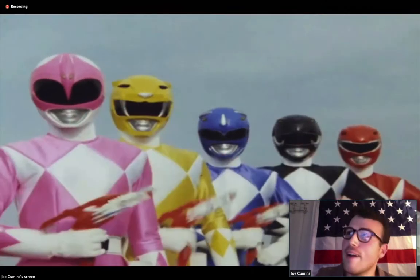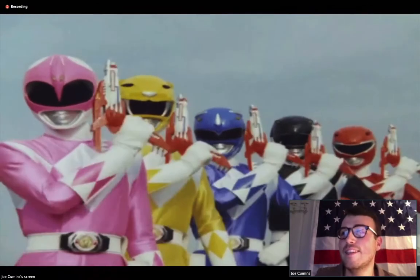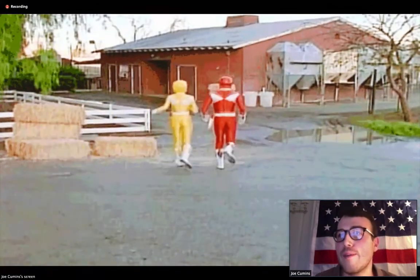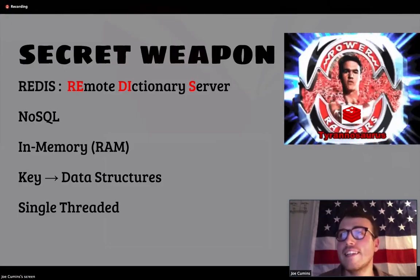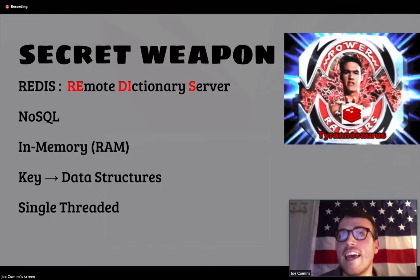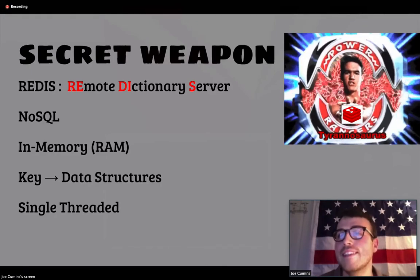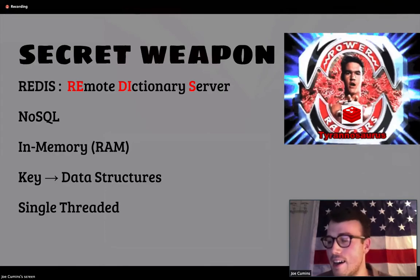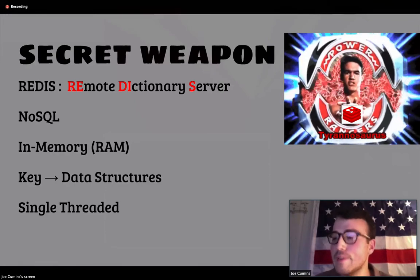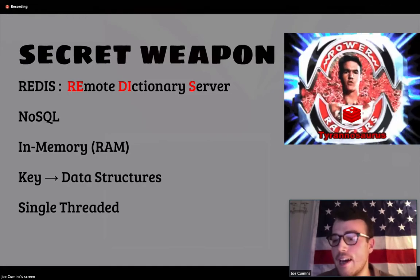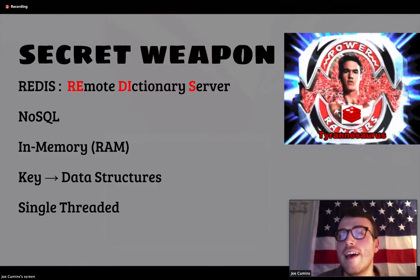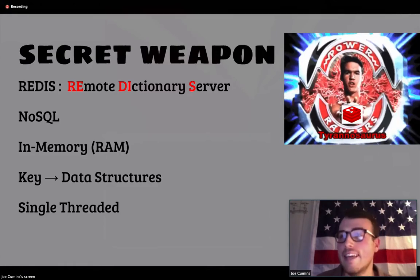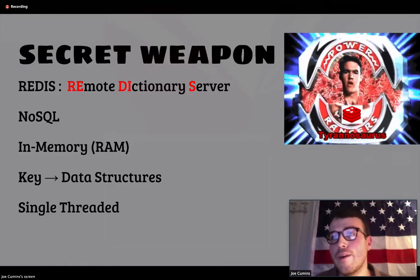Before we jump right in and deal with this, let's talk about our secret weapon and see how it all works. Redis stands for Remote Dictionary Server, which is a NoSQL database. That means it has no tables, and there's no specific way of defining or enforcing how the data relates to the table. Redis is all in memory, so it's in your RAM. And Redis maps keys to data structures.